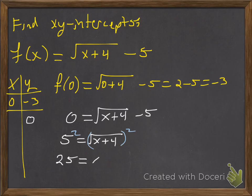So 25 is equal to x plus 4. And then we'll go ahead and subtract 4 from both sides. And we get 21 is equal to x. So there's our x and y intercepts of this radical function.